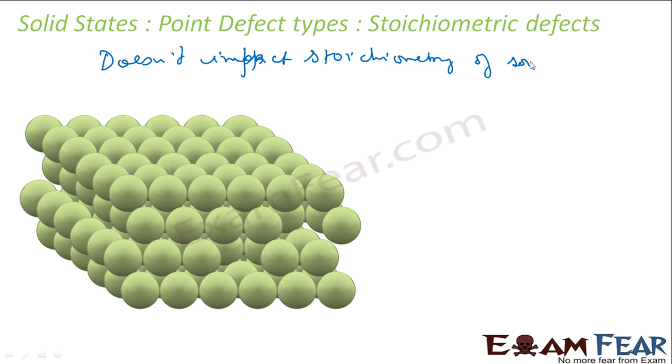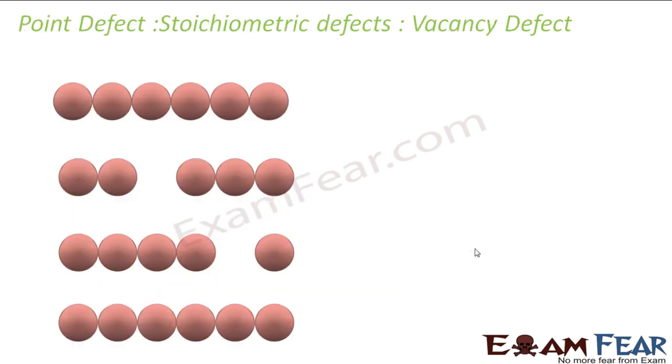stoichiometry. That means no foreign element in this. So we see here there is a gap created. This is a defect. There is a gap here, this is a defect, hollow. So this is the stoichiometric defect. There are two types of stoichiometric defects.